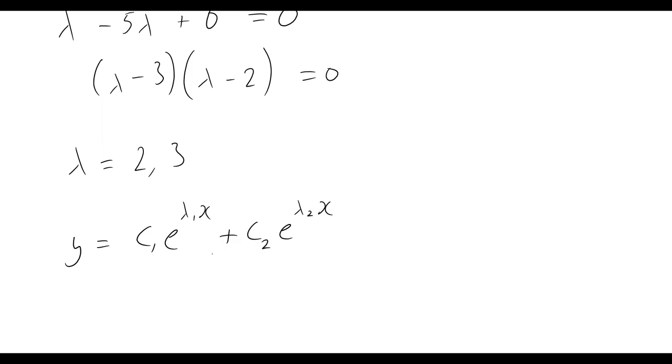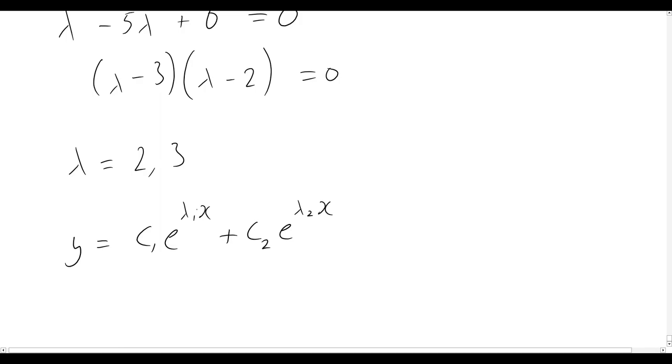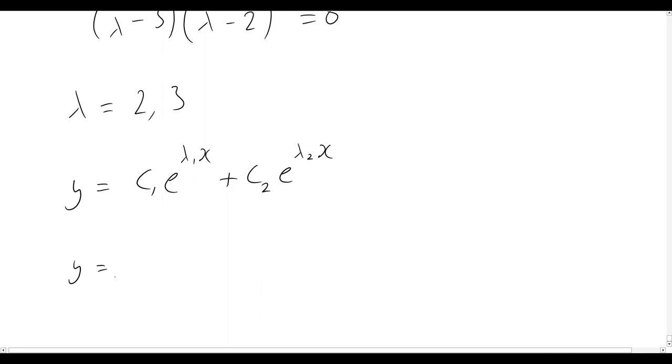c₁ and c₂ are going to be defined by our initial conditions. For this question we didn't actually have any initial conditions, but sometimes they might give you something like y of zero equals three, and then you would use that information to figure out your different constants. But that's okay, that's for another day.